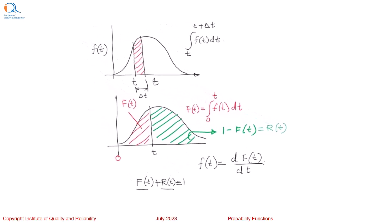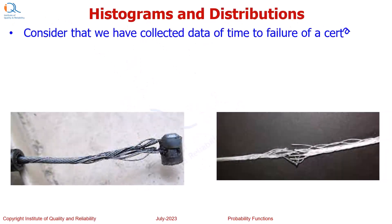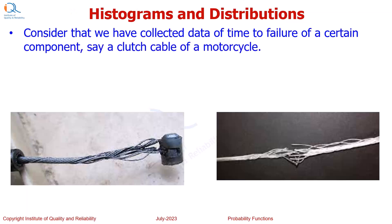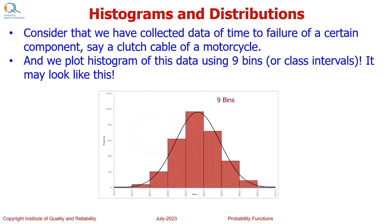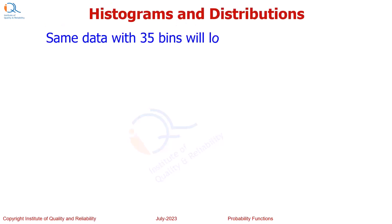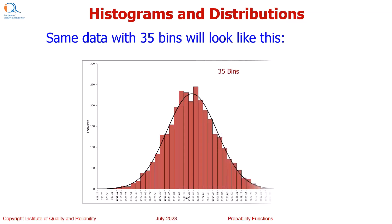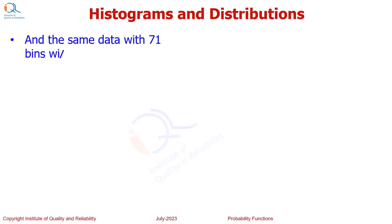To understand probability density function and probability distributions, let us look at some histograms. Consider that we have collected data of time to failure of a certain component, say a clutch cable of a motorcycle. We plot the histogram of this failure data using 9 bins or class intervals — it may look like this. The same data with 35 bins will look like this, and with 71 bins it may look like this.